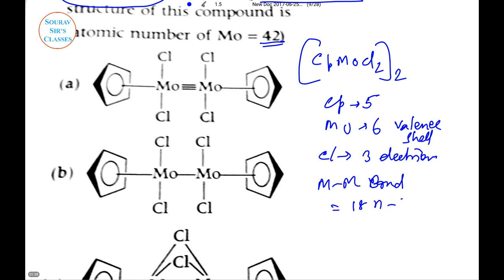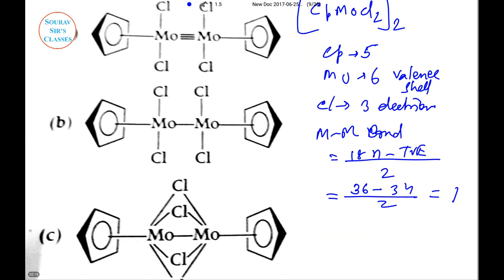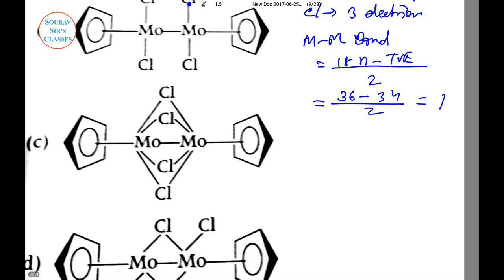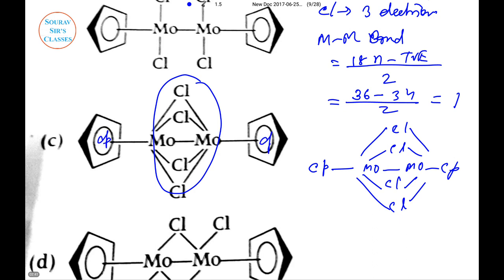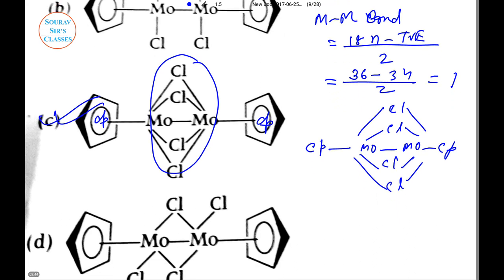Hence the number of M-M bond will be 18n minus TBE divided by 2. So here n equals 2, giving us 36 minus 34 divided by 2, so the answer is 1. Hence the correct structure which obeys the 18 electron rule has Cp and chlorine ligands with a single M-M bond. The thing which matches directly is option C, so option C is the correct answer.